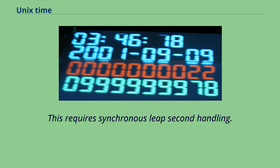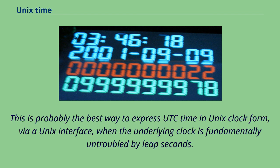The decoding logic required to cope with this style of Unix clock would also correctly decode a hypothetical POSIX-conforming clock using the same interface. This would be achieved by indicating the TIME_INS state during the entirety of an inserted leap second, then indicating TIME_WAIT during the entirety of the following second while repeating the seconds count. This requires synchronous leap second handling, and is probably the best way to express UTC time in Unix clock form via a Unix interface, when the underlying clock is fundamentally untroubled by leap seconds.